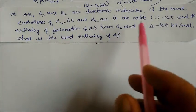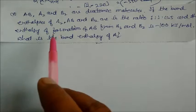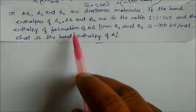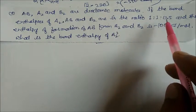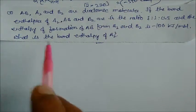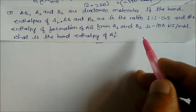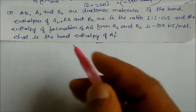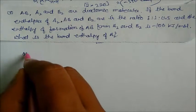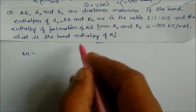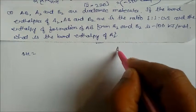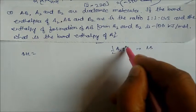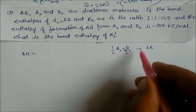Question 7: A₂, AB, B₂ are diatomic molecules. If the bond enthalpies of A₂, AB, and B₂ are in the ratio 1 : 1 : 0.5, and the enthalpy of formation of AB from A₂ and B₂ is −100 kilojoule per mole, what is the bond enthalpy of A₂? Write the equation: ½A₂ + ½B₂ → AB.